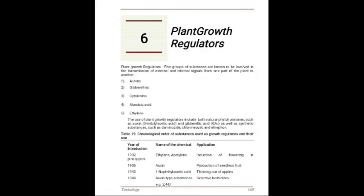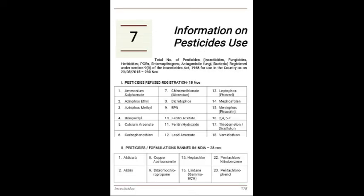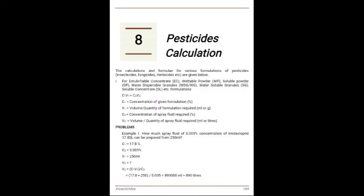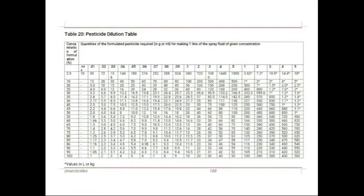The sixth chapter is Plant Growth Regulators, containing information about auxins, gibberellins, cytokinins, abscisic acid, and ethylene. The seventh chapter contains information about pesticide uses. The eighth chapter covers pesticide calculations and pesticide dilution tables.